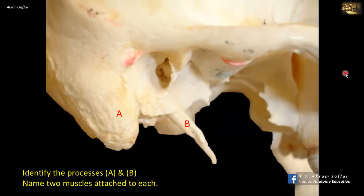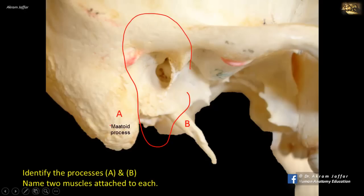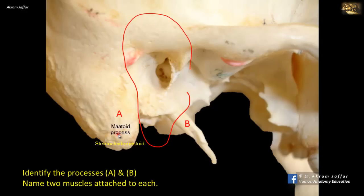Identify processes A and B. A is the mastoid process — the bony process that can be felt behind the auricle. The first muscle attached to the mastoid process is the sternocleidomastoid muscle, which attaches to the sternum, clavicle, and mastoid process — specifically to its outer surface. On the inner surface of the mastoid process is attached the posterior belly of the digastric muscle.